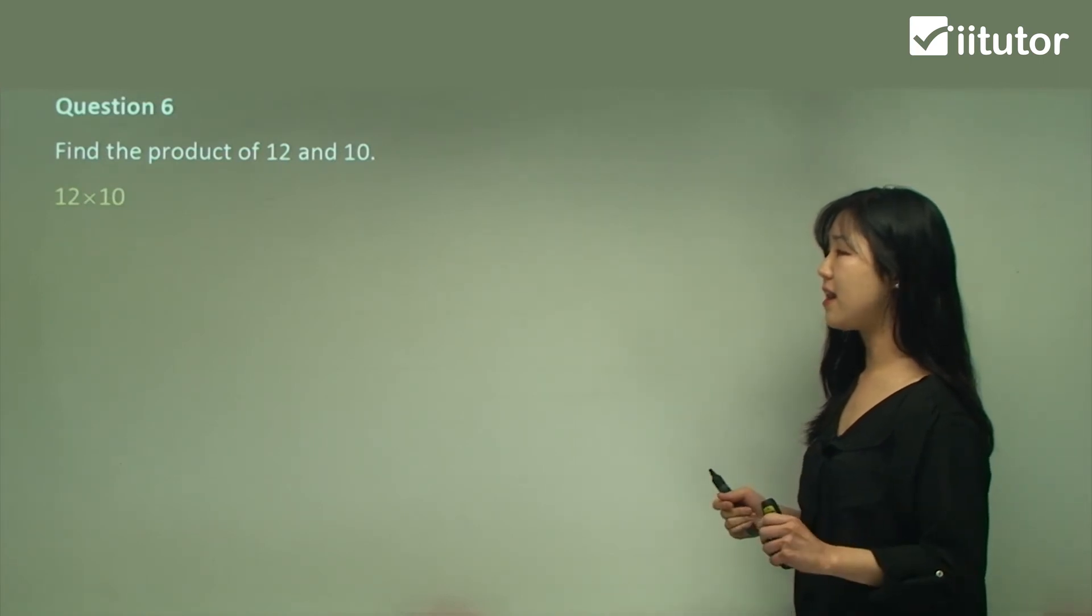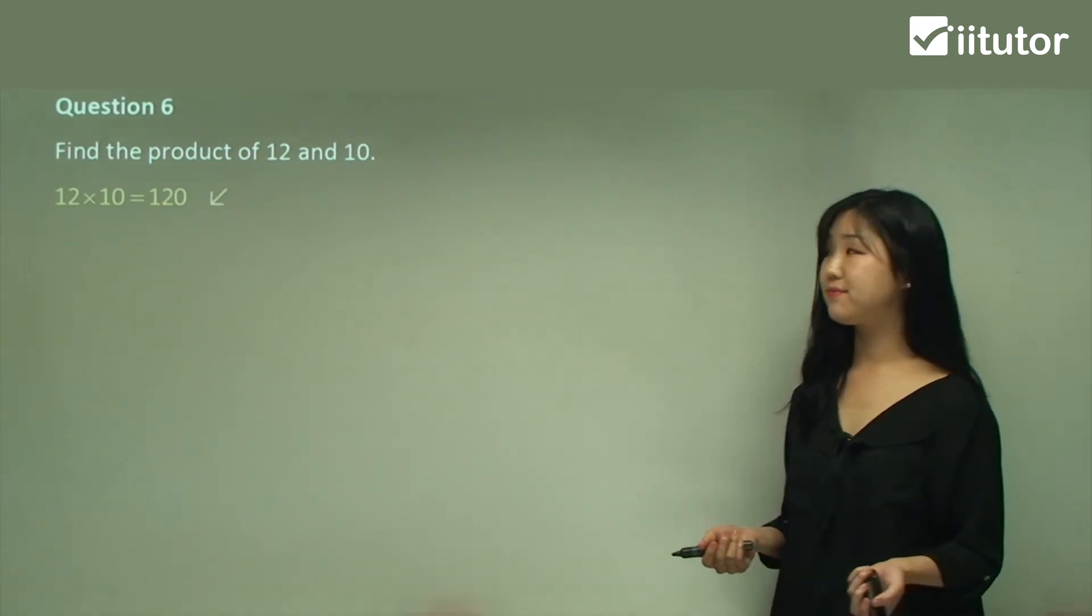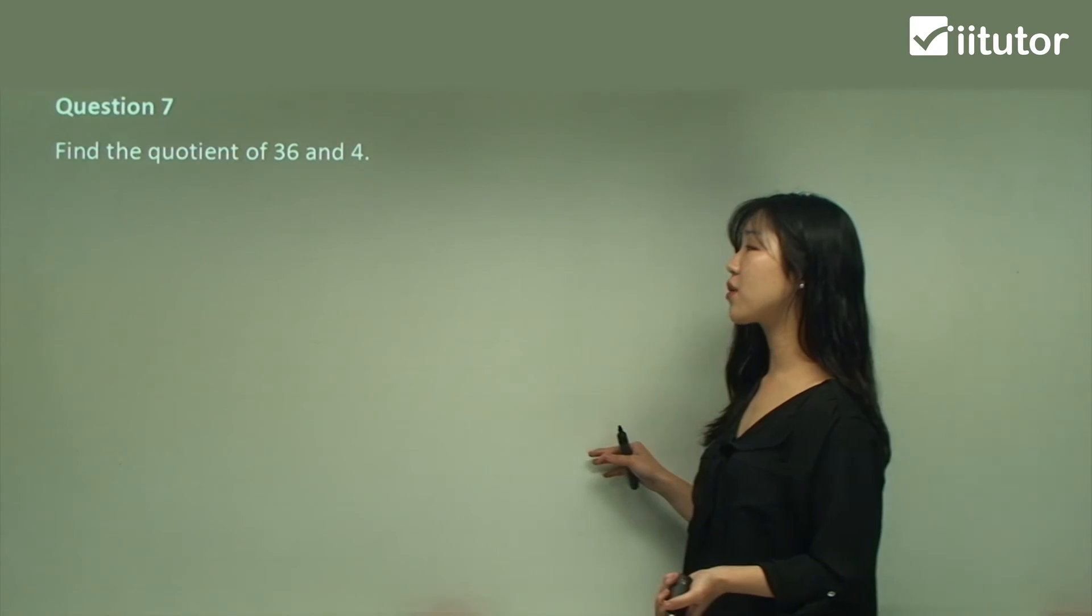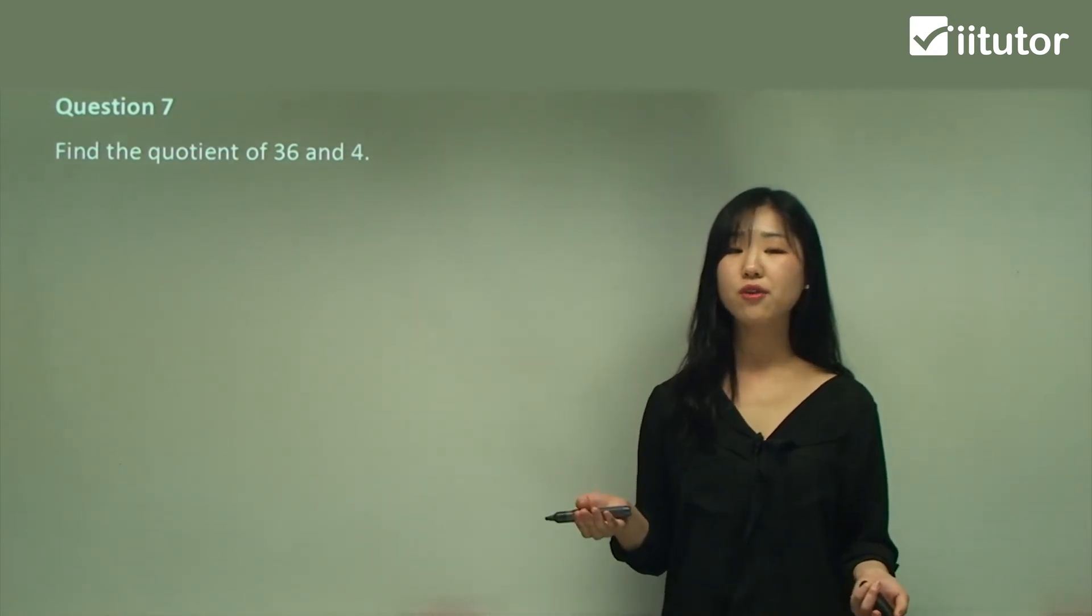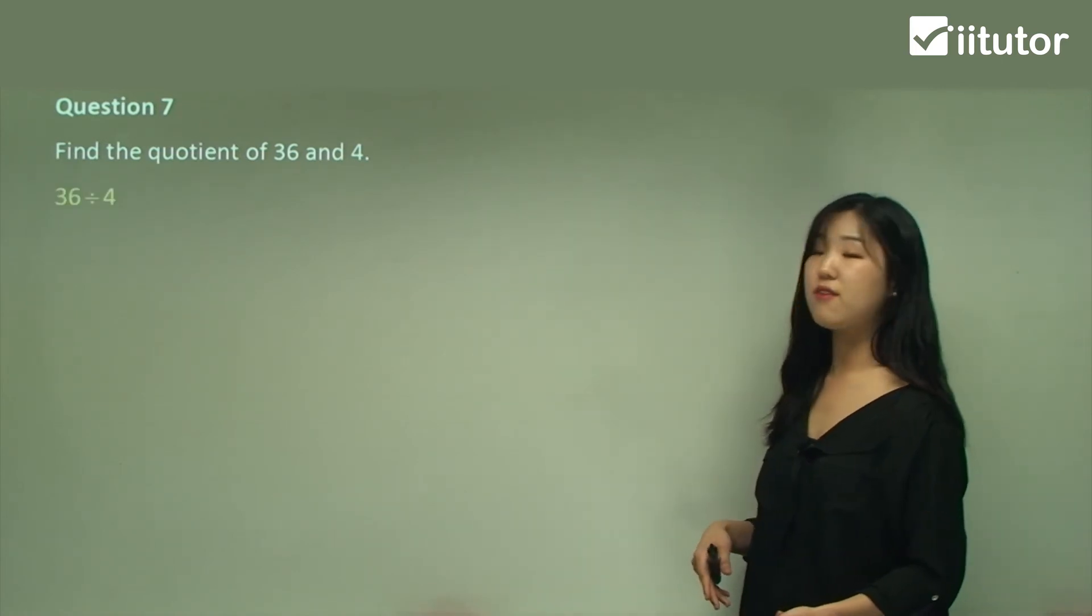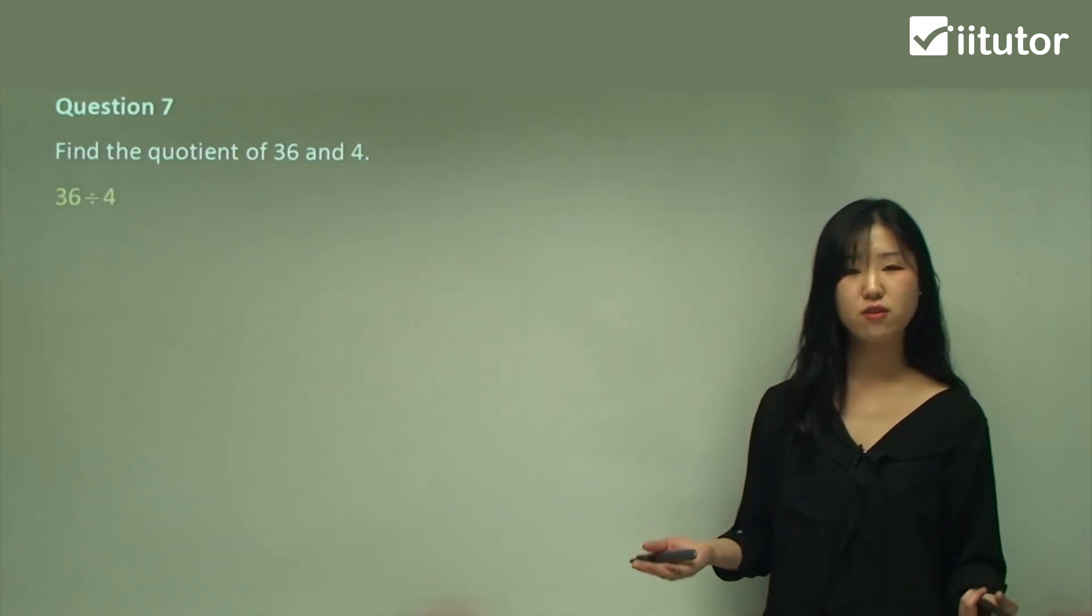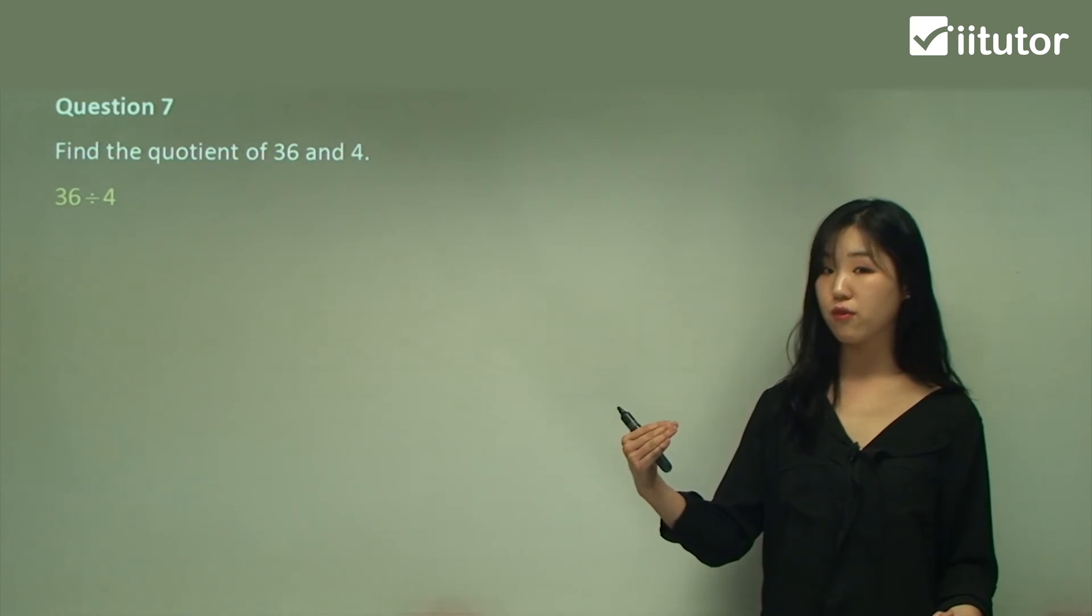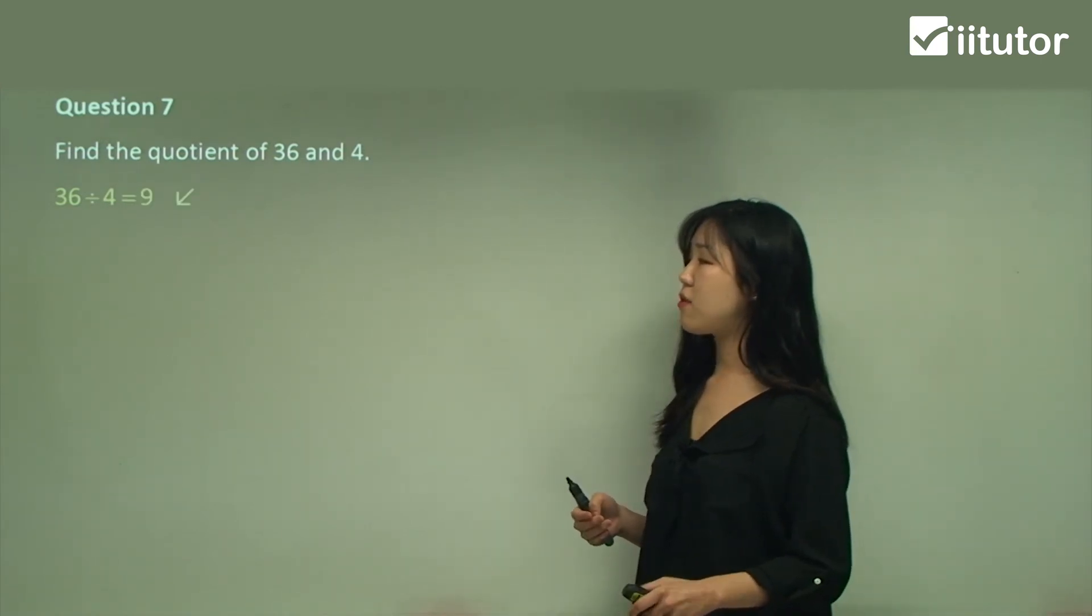Question seven: find the quotient of 36 and 4. Quotient is the same as dividing, division. So we're going to do 36 divided by 4. You can use a fraction if you want—36 over 4. It's the same answer. 36 divided by 4 is 9. You guys should be good at your multiplication and divisions of these ones.